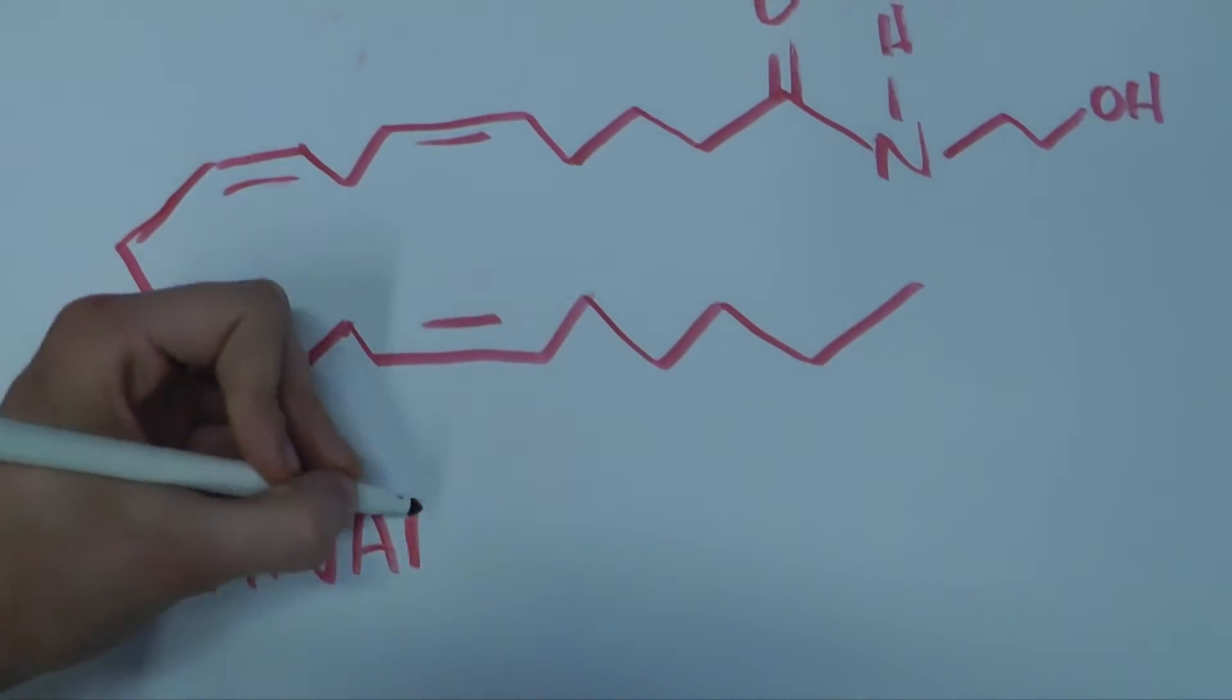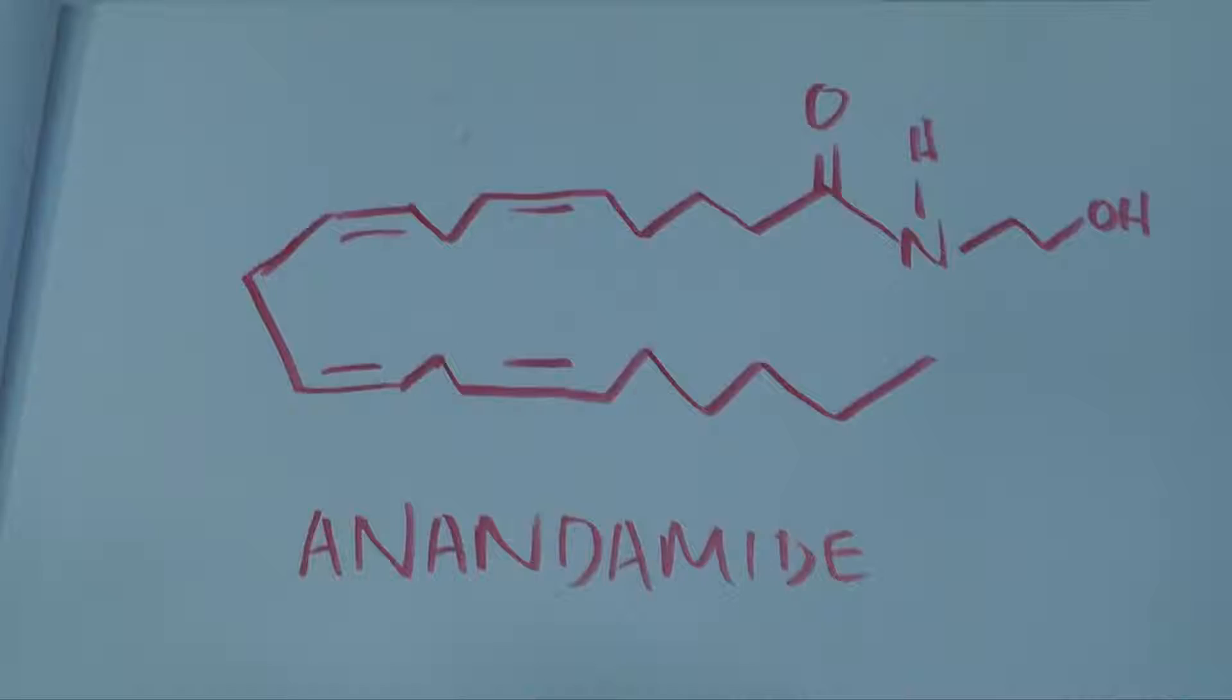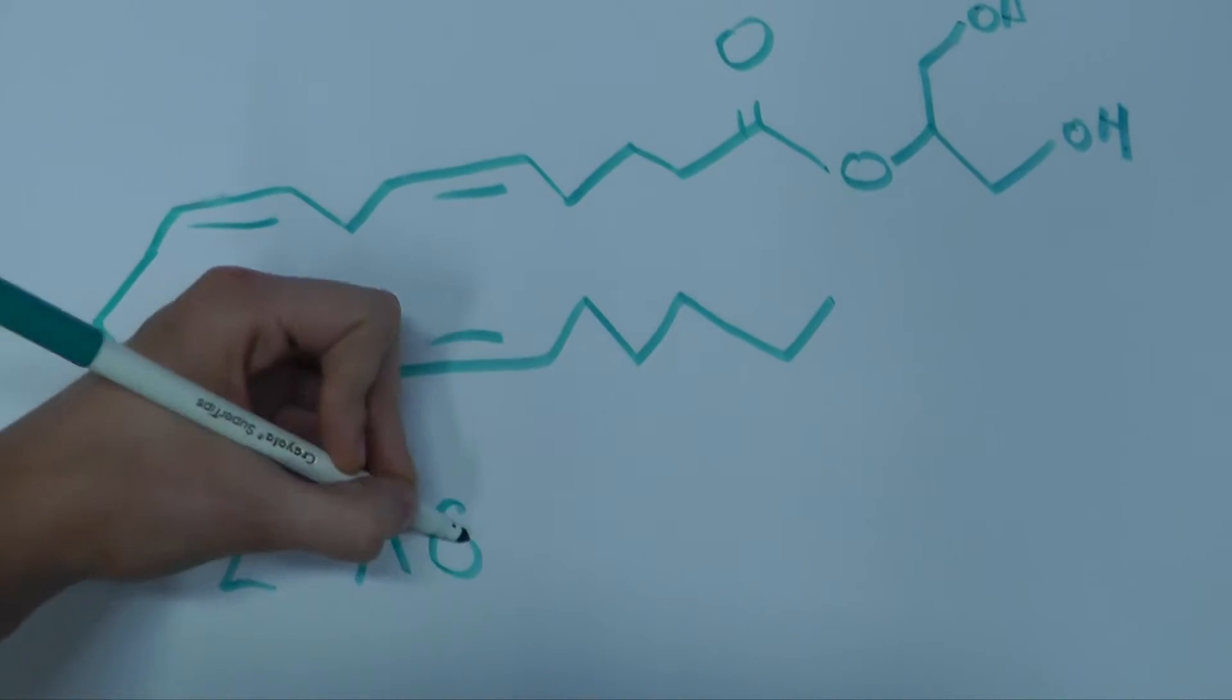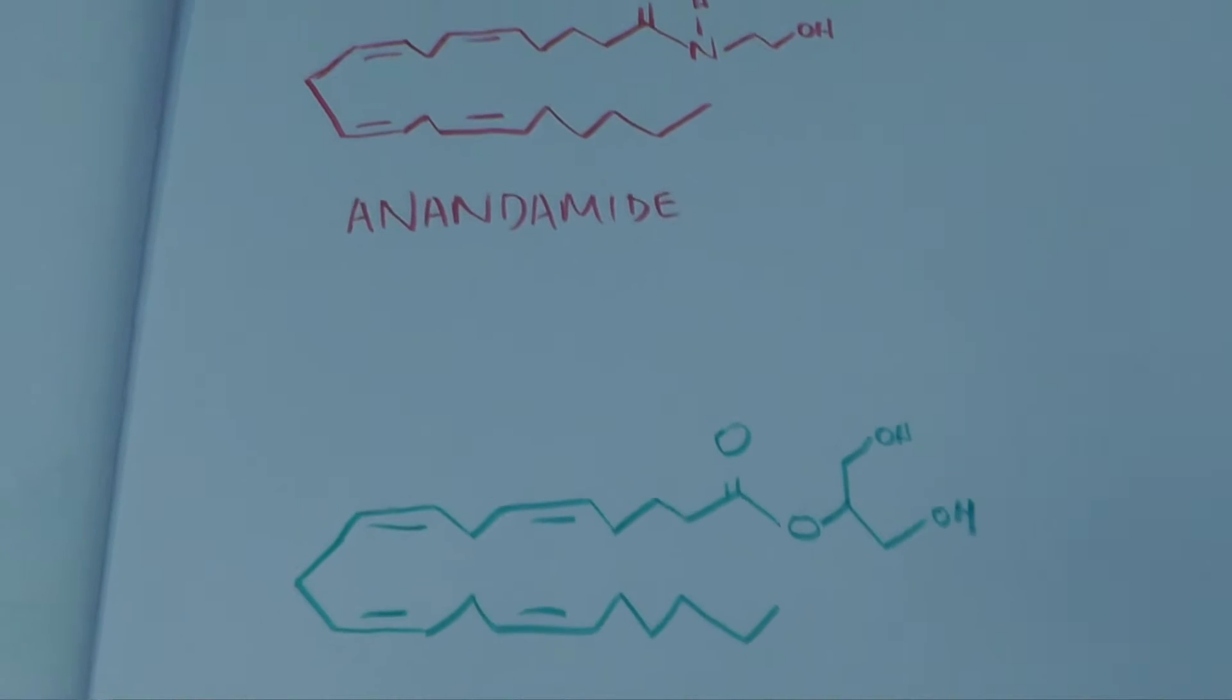There are structurally similar compounds made naturally within our body and comprise the endocannabinoid system. The two main endocannabinoids are anandamide and two-arachidonyl glycerol.